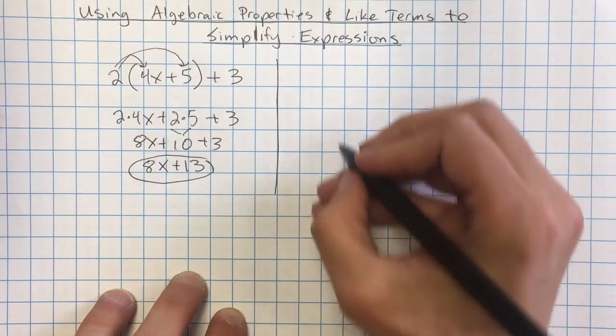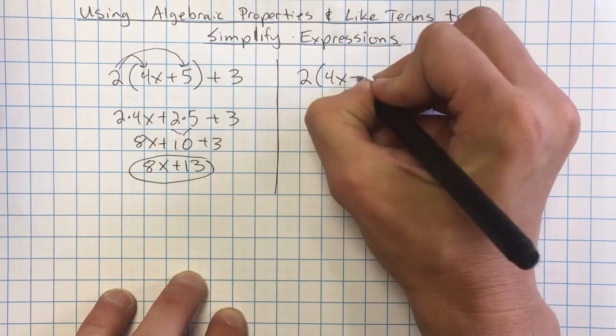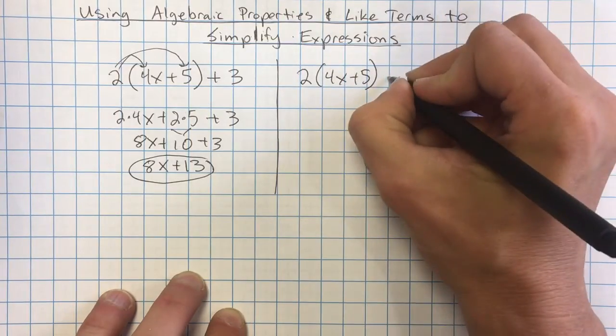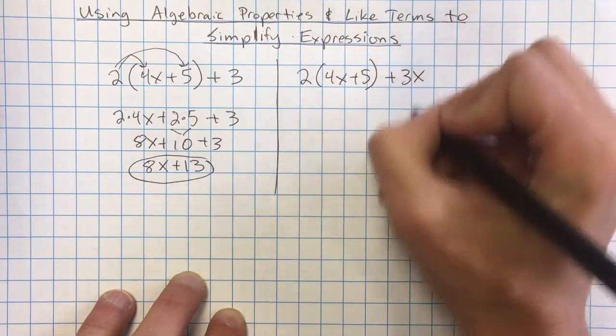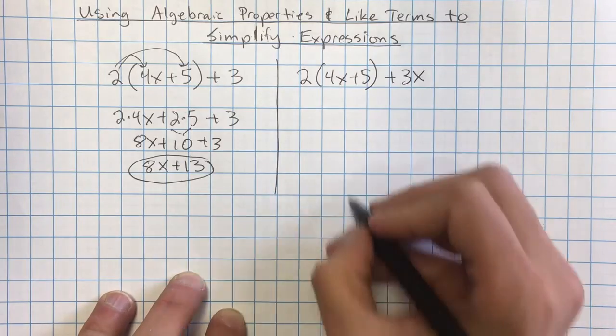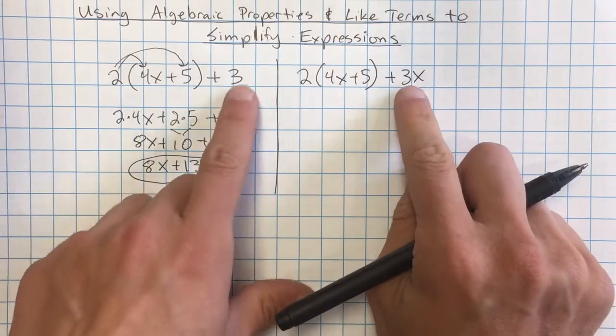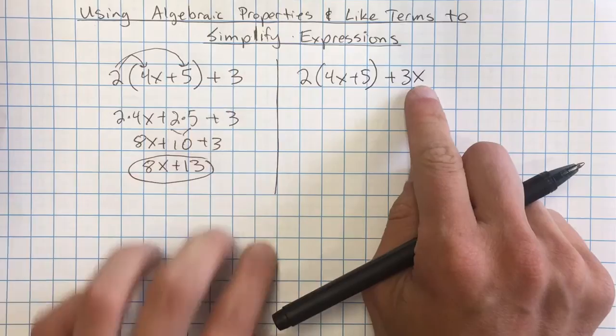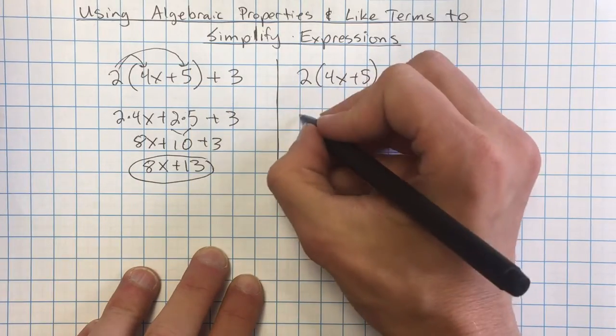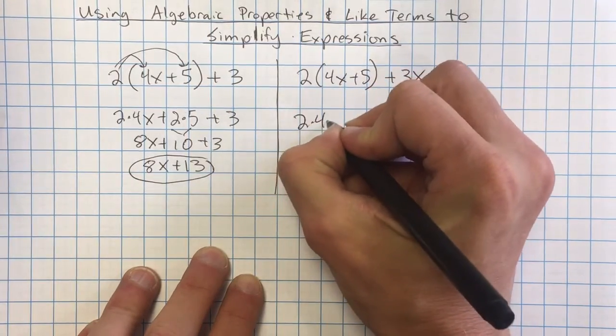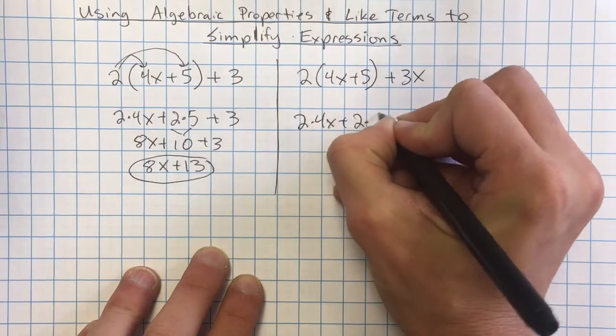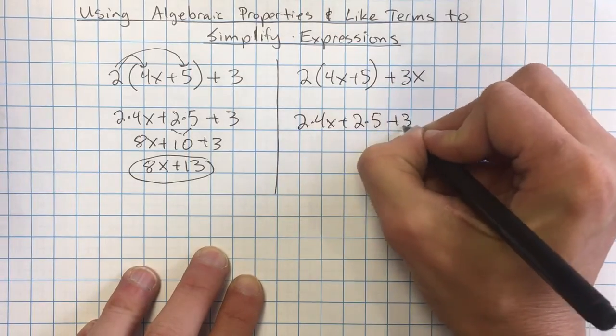Now alternatively you could have something very similar. You could have 2 times 4x plus 5 and then plus 3x. Now you can see again this looks very similar. The only difference is really that we have a 3 here and a 3x here. So we would solve it the same way. I would apply the distributive property 2 times 4x plus 2 times 5. Bring down that plus 3x.